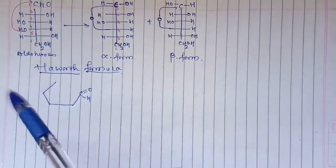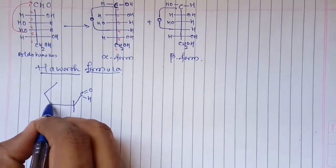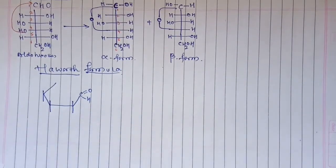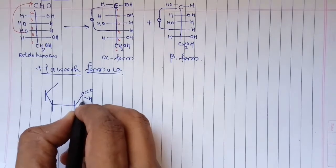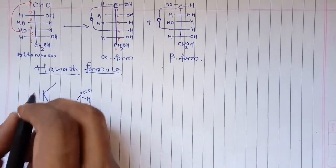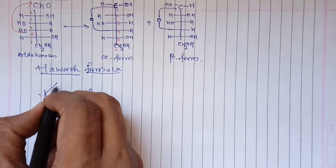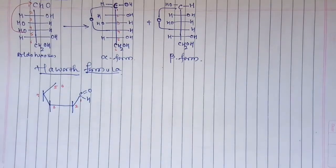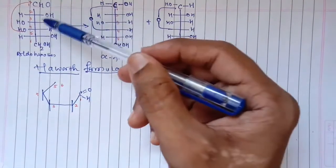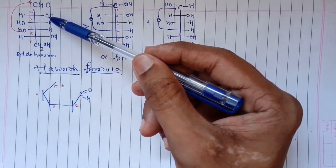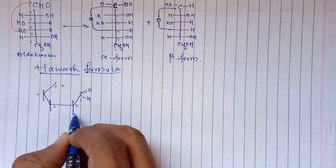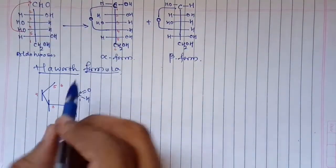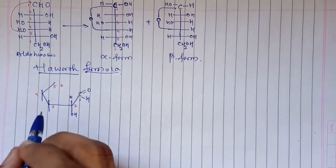I will write carbon number two here, carbon number three here, and carbon number four here. Let me number this: carbon number one, carbon number two, three, four, five. Here I am going to write carbon number six as well. At carbon number two, the OH group is on the right hand side, so it should be written downwards. The H is on the left hand side, so it should be written upwards. The same rule applies for carbon number three.